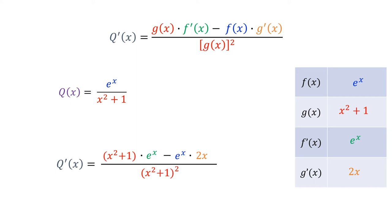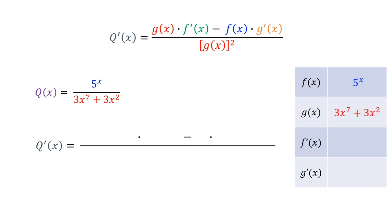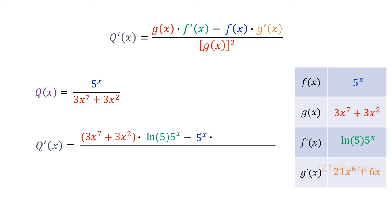Let's look at another example. Here is a new function, 5 to the x divided by 3x to the 7 plus 3x squared. So 5 to the x is our f of x, and 3x to the 7 plus 3x squared is our g of x. The derivative of f of x is the natural log of 5 times 5 to the x, and the derivative of g of x is 21x to the 6th plus 6x. Applying the quotient rule gives us the derivative of q of x.